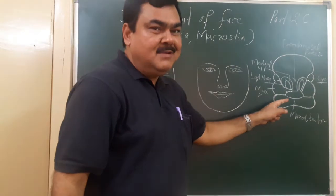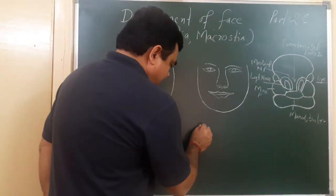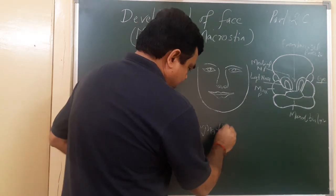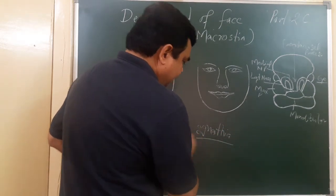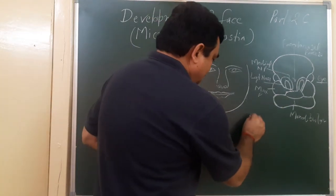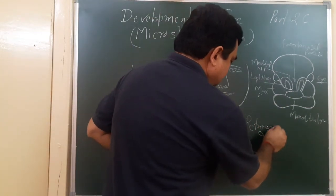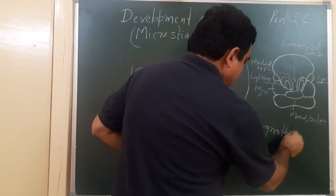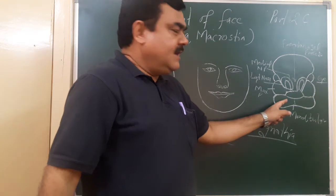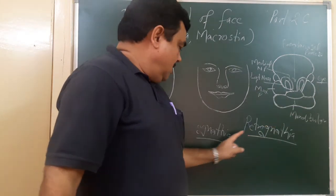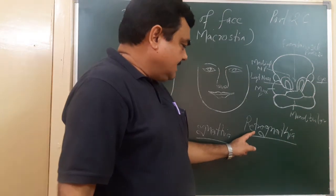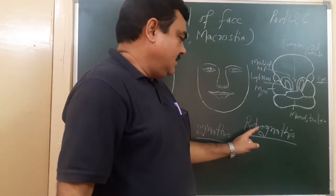In some cases, the mandible does not develop at all. This is known as agnathia. In cases where it poorly develops, this is known as retrognathia. So if the mandible does not develop, it is agnathia; if it partially develops, it is retrognathia.